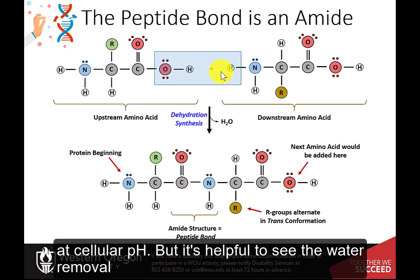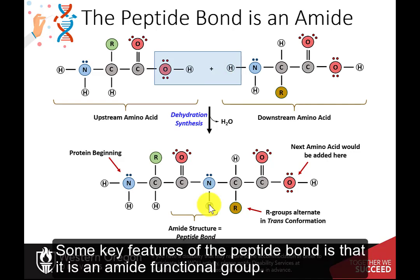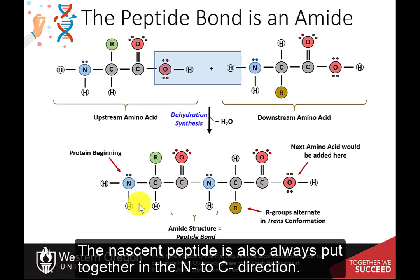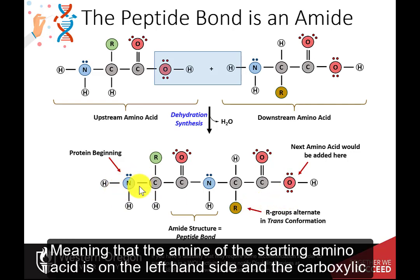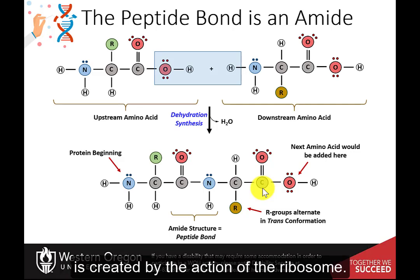It's helpful to see the water removal in the deionized state. Some key features of the peptide bond are that it's an amide functional group. The nascent peptide is also always put together in the N to C direction, meaning that the amine of the starting amino acid is on the left-hand side and the carboxylic acid of the last amino acid is on the right-hand side. This directionality of protein synthesis is created by the action of the ribosome.